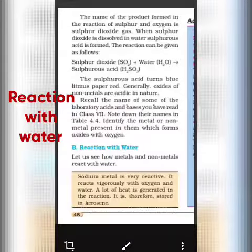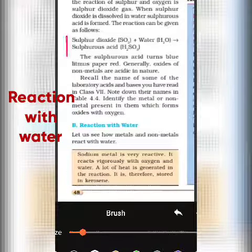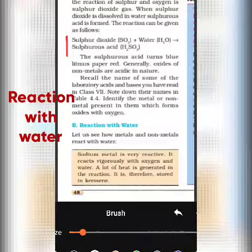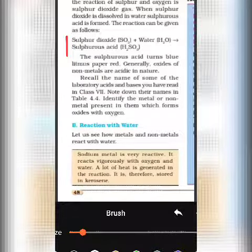How will you know that it is an acid? The sulfurous acid turns blue litmus paper red. This is a property you have read in seventh class, that an acid turns blue litmus paper into red. Generally, the oxides of non-metals are acidic in nature.